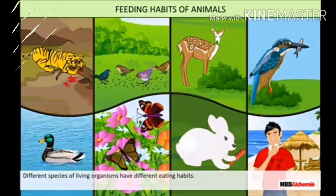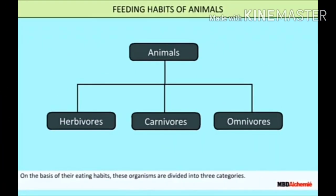Meat is obtained from hen and goat. Next topic is feeding habits of animals. Different species of living organisms have different eating habits. Some animals eat grass, whereas some animals eat the flesh of other animals, while some other animals eat both plants and the flesh of other animals. So we can group animals into three categories on the basis of their feeding habits.